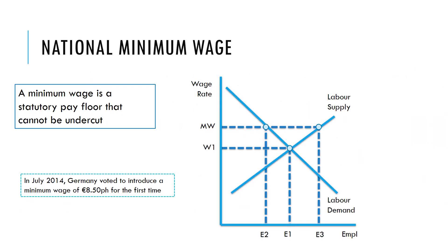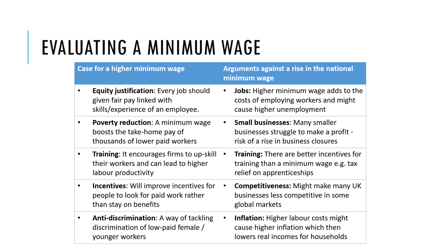National minimum wage is an important part of employment legislation. Minimum wage is a pay floor that a business cannot go below. For example, in Germany in 2014 a minimum wage was introduced of €8.50 per hour. On screen are some of the cases for and against a minimum wage — pause the video here, have a read through them, take a screenshot and stick them in your notes.